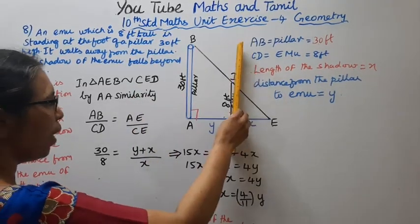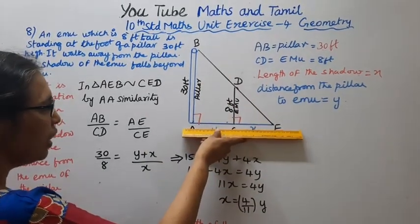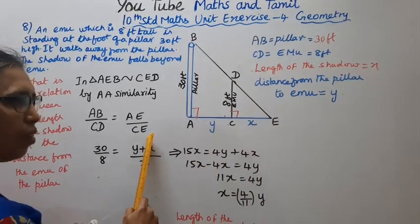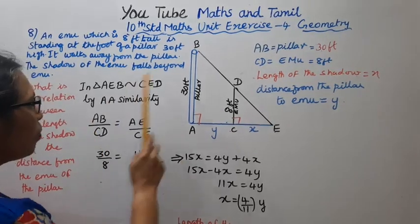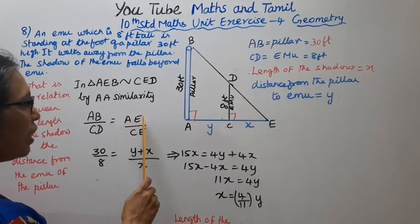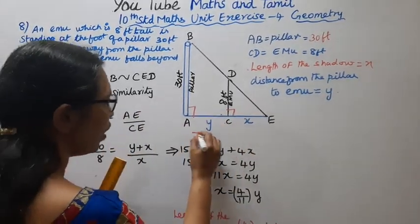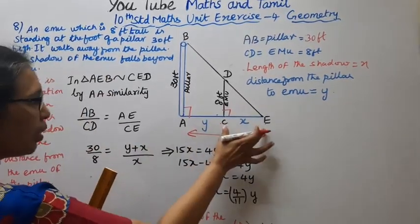AB by CD equals AE by CE. So 30 by 8 equals Y plus X by X. 15 by 4 equals Y plus X by X.